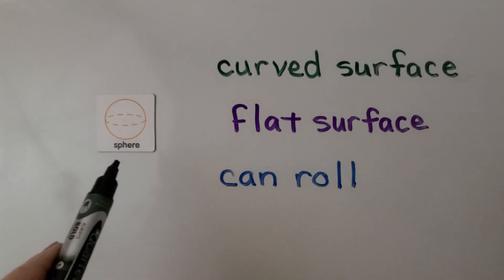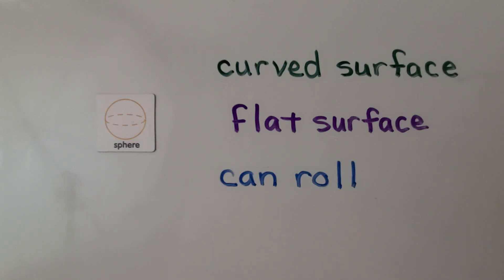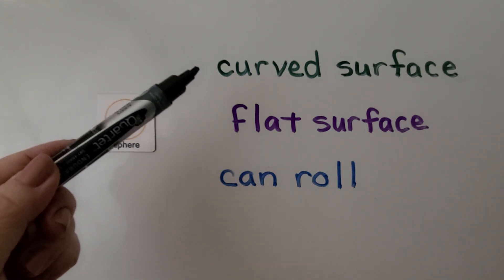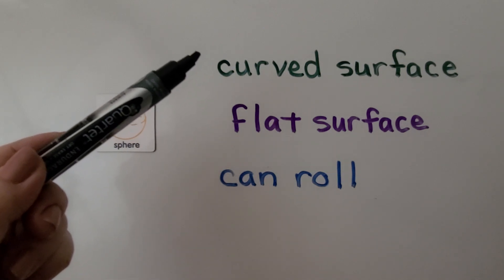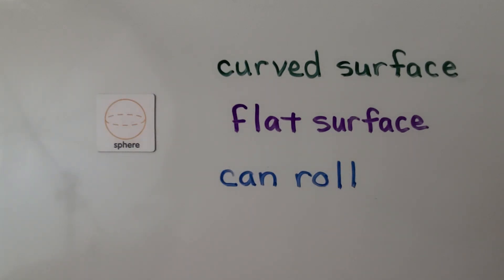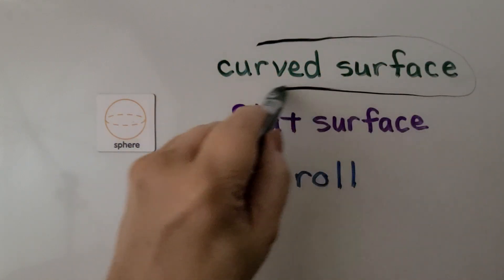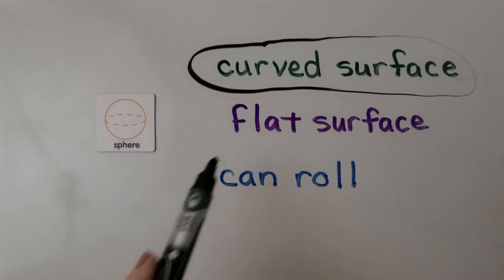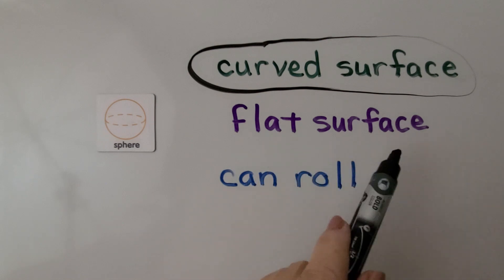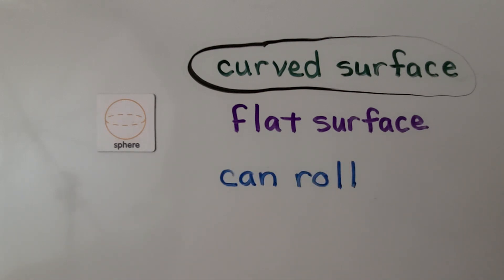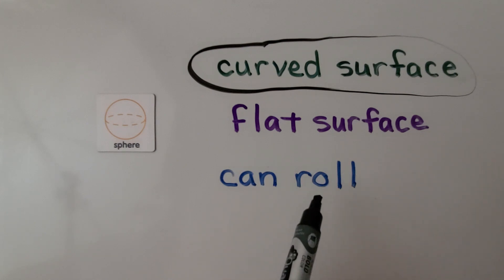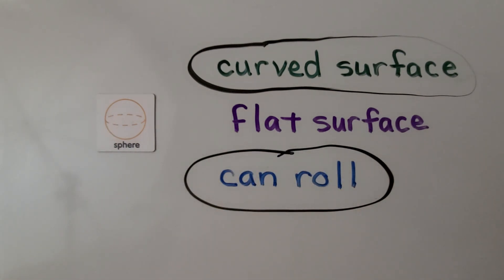Here we have a sphere and we need to circle all the words that describe a sphere. This says 'curved surface' — does curved surface describe a sphere? Yes, a sphere has a curved surface, so we can circle this. This says 'flat surface' — does flat surface describe a sphere? No, a sphere does not have any flat surfaces, so we're not going to circle flat surface. This says 'can roll' — does can roll describe a sphere? If you said yes, you're right. Can roll describes a sphere — a sphere can roll like a ball.